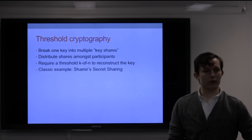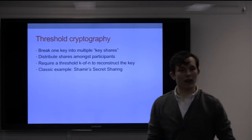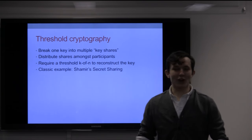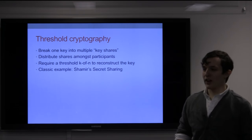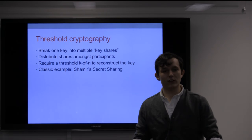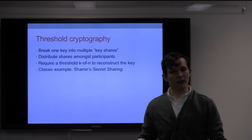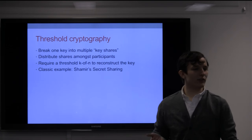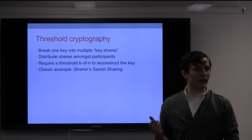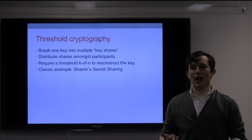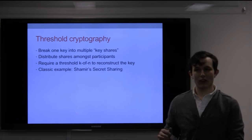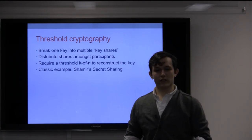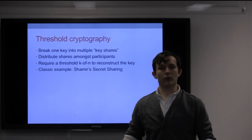The classic example is Shamir's secret sharing. The whole idea is that you represent a key as a polynomial over a finite field, and you use the property that for an N degree polynomial, you need N points on it to figure out what that polynomial is. Like if you have a parabola, you can't figure out what that parabola is with two points. So the idea is you'll split it up into points, distribute those, and then you can use those to reconstruct the key.